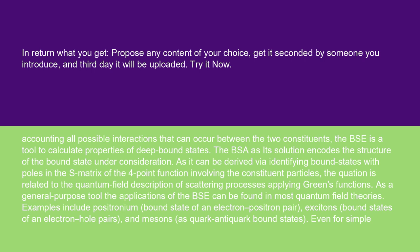Examples include positronium, bound state of an electron-positron pair, excitons, bound states of an electron-hole pairs, and mesons as quark-antiquark bound states.